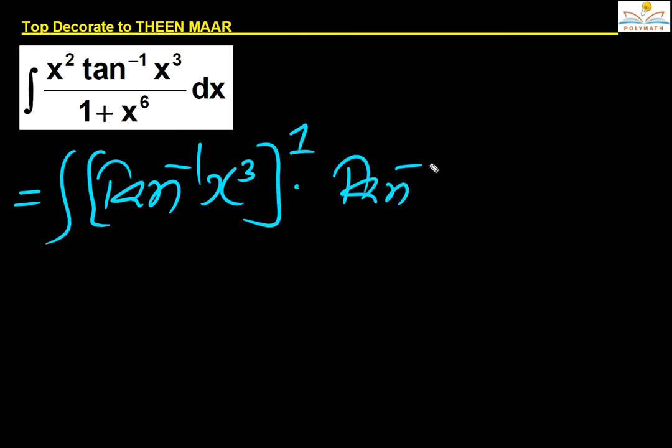If you observe the derivative of tan inverse x cubed, that is, I am writing it as tan inverse x cubed dash. Now tan inverse x cubed dash is 1 upon 1 plus x power 6.